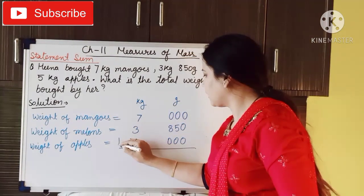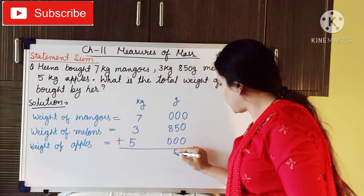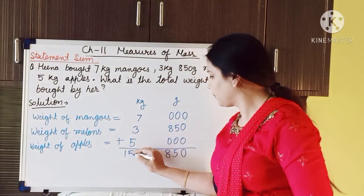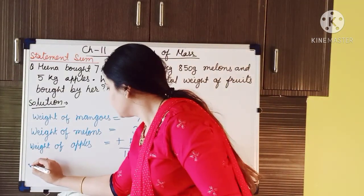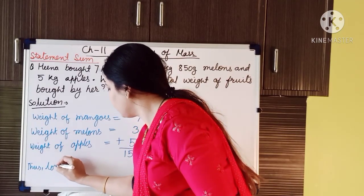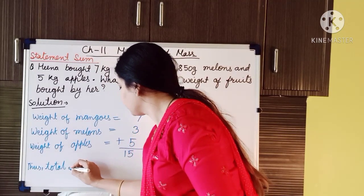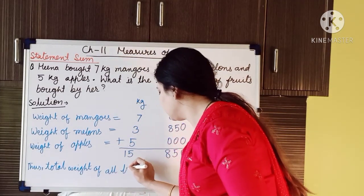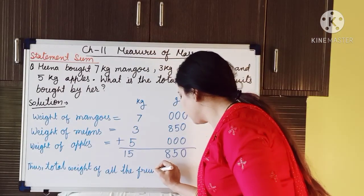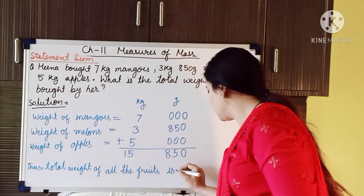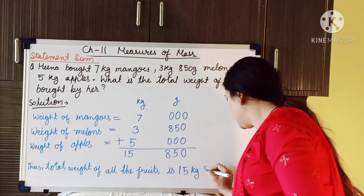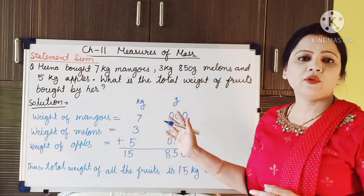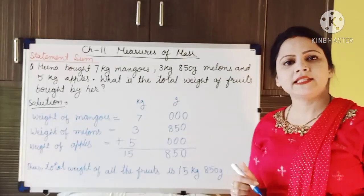Now we add. The grams column: 0, 5, and 8. For kilograms: 7 plus 3 is 10, plus 5 is 15. The final statement: Thus, total weight of all the fruits is 15 kg 850 gram. Understood how to solve the statement sum? Just pause this video and write these examples in your maths notebook. Thank you.